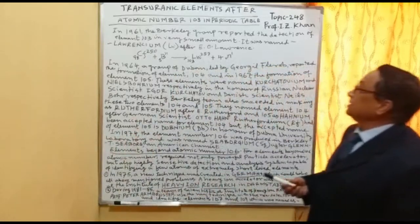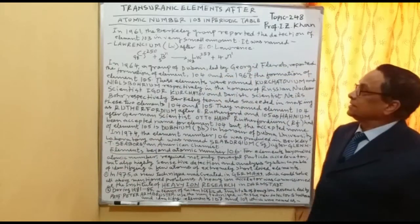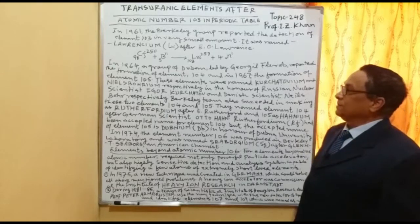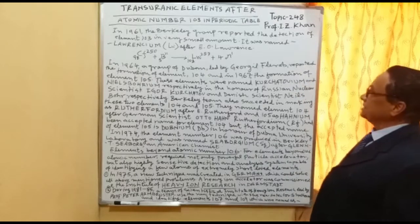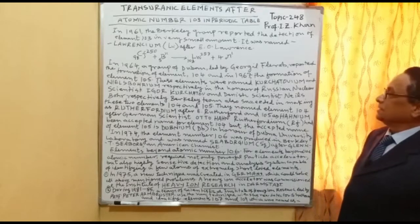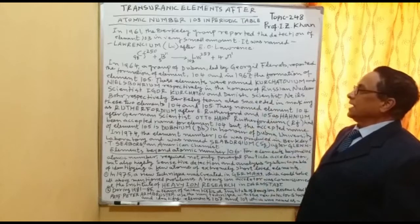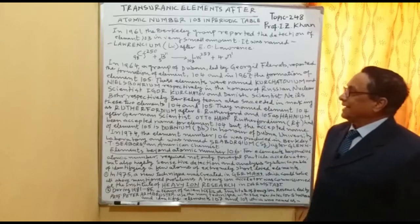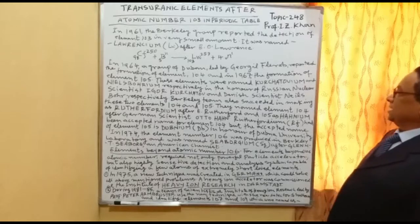For trans-uranic elements after atomic number 103: in 1961, the Berkeley group reported the detection of element 103 in very small amounts. It was named Lawrencium (LW) after E.O. Lawrence. It was produced by bombarding Californium-98-250, yielding LW-103 and LW-257.